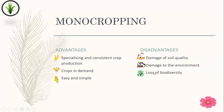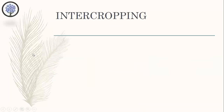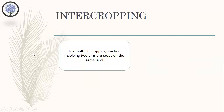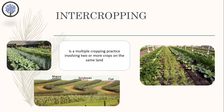Now let's move to intercropping. Intercropping is a multiple cropping practice involving two or more crops on the same land. The most common goal of intercropping is to produce a greater yield on a given piece of land by making use of resources that would not be utilized by a single crop. Common crop combinations for intercropping include corn and soybean, or corn, soybean and oat.